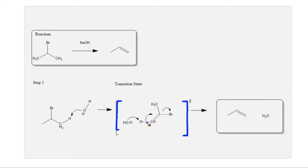Remember that the leaving group, bromine, and the alpha carbon have to be orientated in an anti-periplanar geometry to accurately predict the stereoselectivity of the double bond in complex molecules.